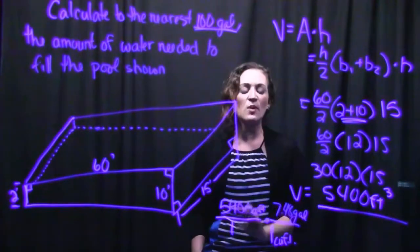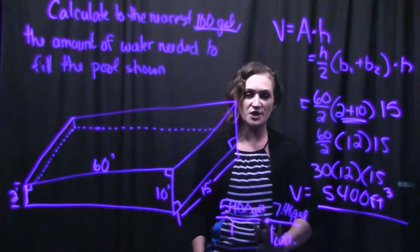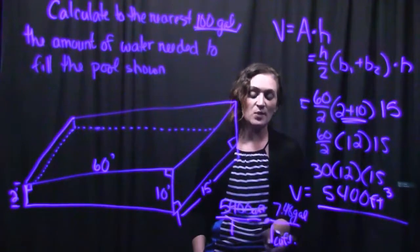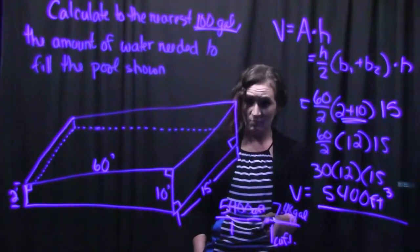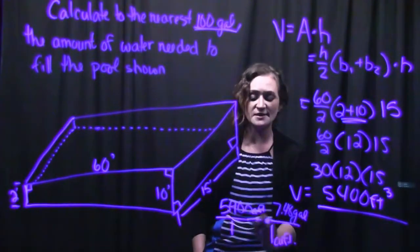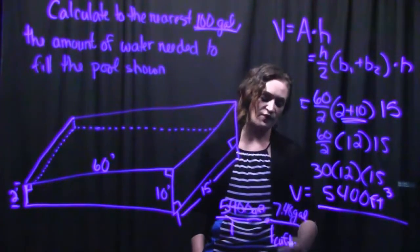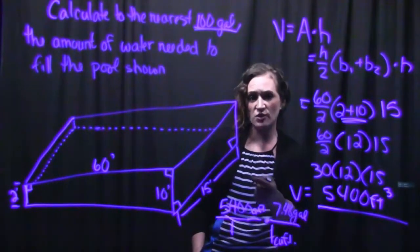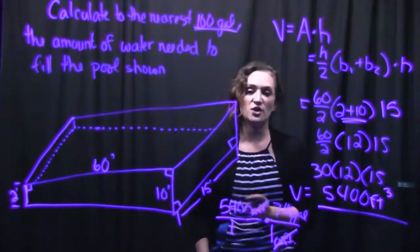And what we want to do is we want to make sure that we set this calculation up so that the measurement that we want to get rid of, we want to get rid of cubic feet and we want to be left with gallons. So we make sure that the cubic feet are set across from each other in the fractions. That way they can cancel with each other.